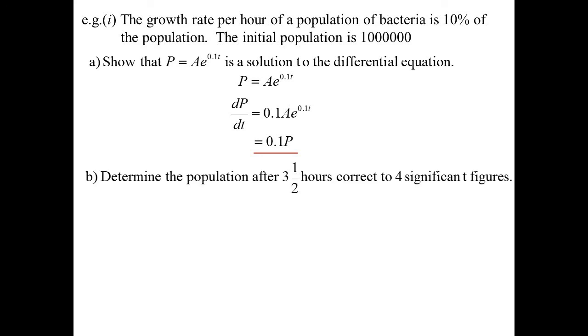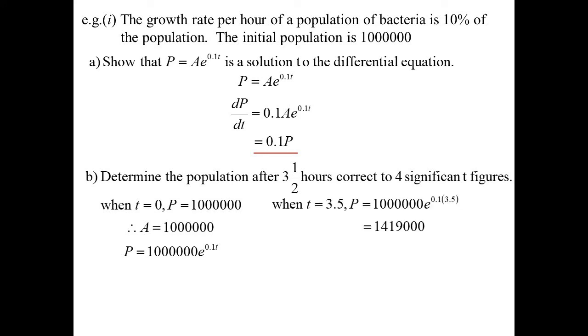So determine the population after three and a half hours. Really, it's just a substitution question. But we've got to work out the formula. At this stage, I've only got it as Ae^(0.1t). A, remember, represents the initial population. So ours will be 1,000,000e^(0.1t). We want to know when t is 3.5. So we now have 1,419,000 pieces of bacteria crawling all over you. Another 500,000 almost. After three and a half hours.